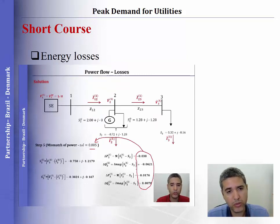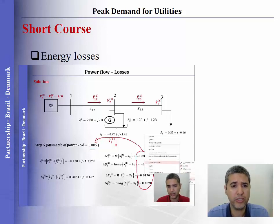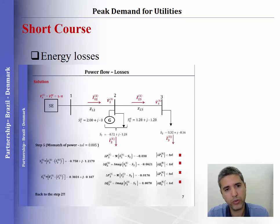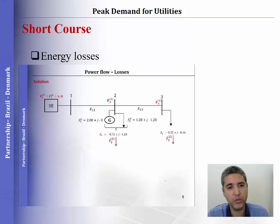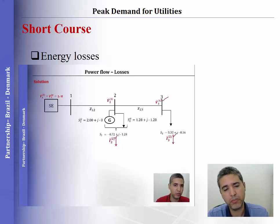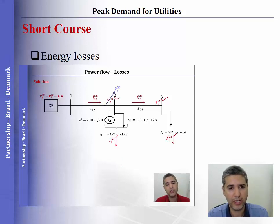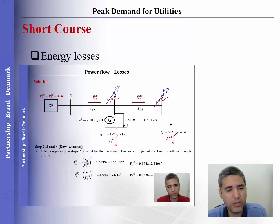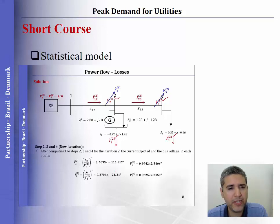In the second part of this course, I explain how to incorporate energy losses into this problem. Because we are talking about the frontier — the definition of the contract between the transmission and distribution system — we need to incorporate the energy losses of the distribution system in order to compute the peak demand, or the power flow through the frontier of both systems. I'm presenting some video examples on your screen to give you an idea of what you will find in this short course.